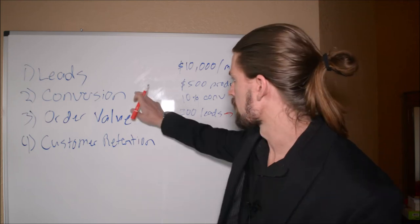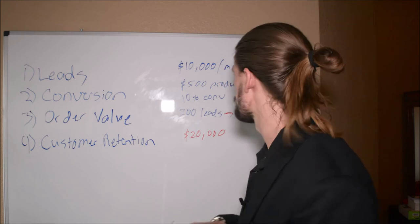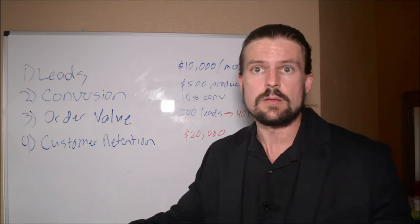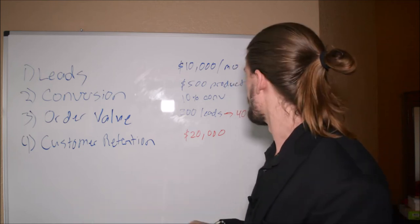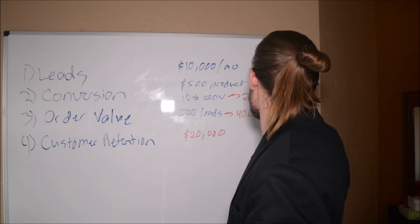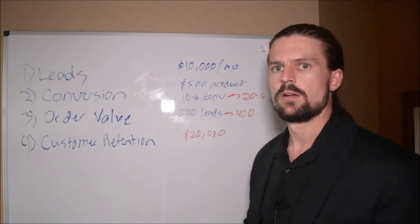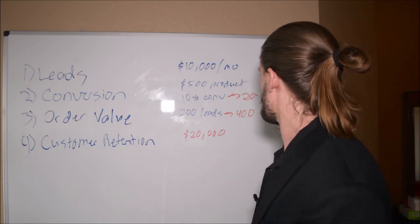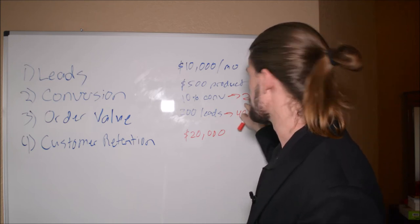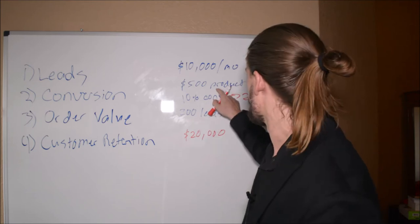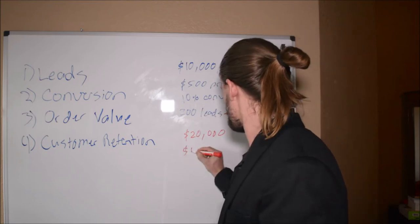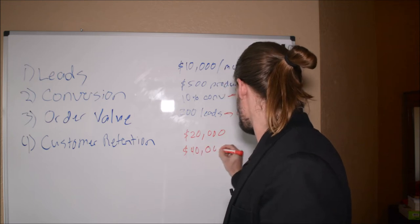Now let's go to the conversion rate. Let's say we can double our conversion rate — we're at 10%, we learn some better sales strategies, we teach our sales team to use those better strategies, and we convert that 10% to 20%. Now we go to our 400 leads times 20%, and we're getting 80 customers at $500 a pop. Our monthly revenue has just gone up to $40,000.